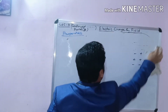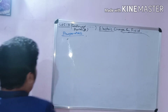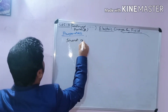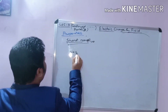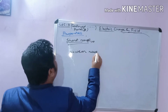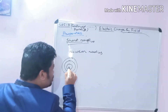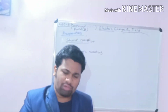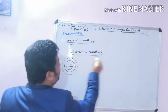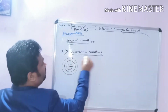Coulomb's force is a long range force, not a short range force. The short range force is the nuclear force. Coulomb's force is applicable for distances greater than the nuclear radius. The nuclear radius is approximately 10 to the power of minus 15 meters. The distance between charges must be greater than this nuclear radius for Coulomb's law to be applicable.